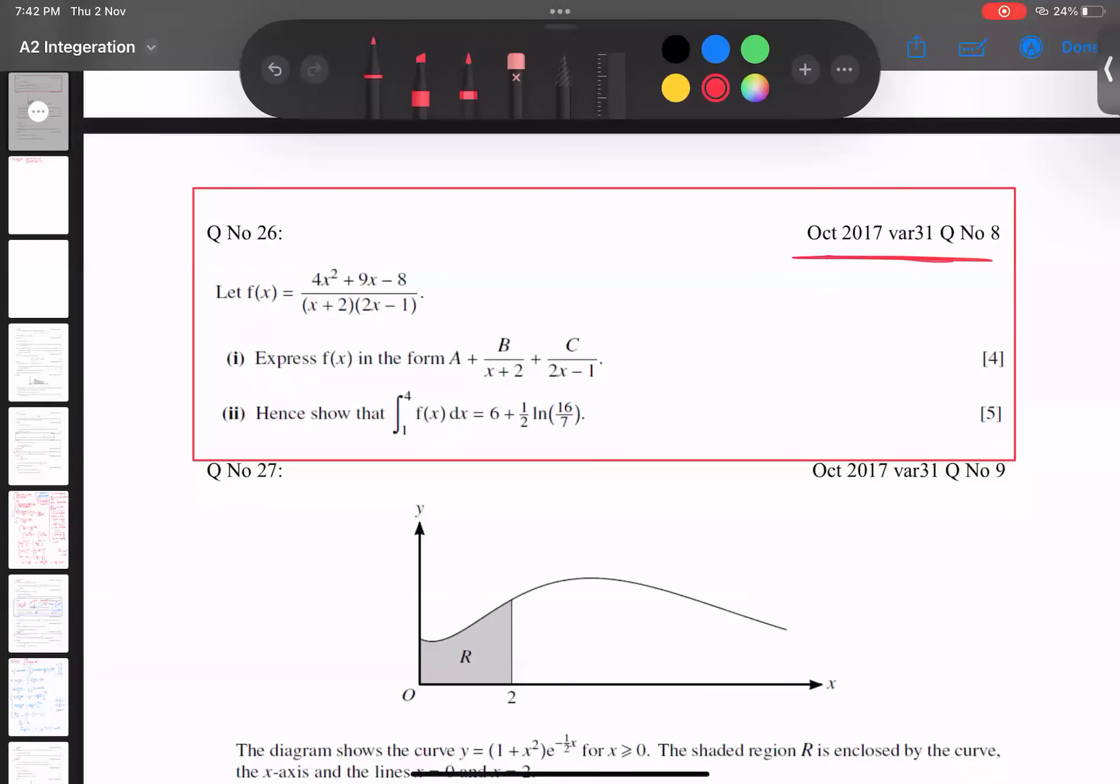Question from October 2017, variant 31, question number 8. We have to convert into this format. It's very clear the upper power is 2, and x times x is also x squared. If upper power and lower power are equal, this is called an improper fraction. So let's start.